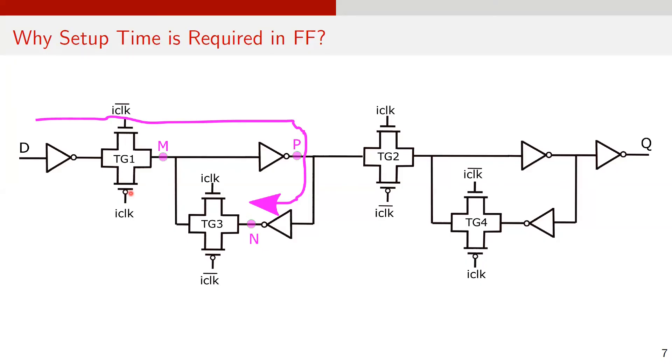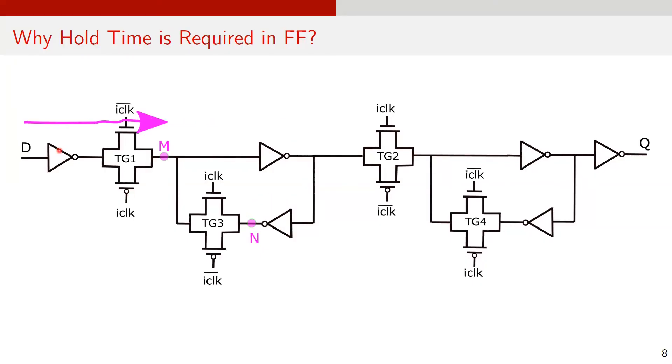Now for the hold time. The clock signal goes through inverters to generate I-clock and I-clock bar. So there is a time delay between clock, I-clock, and I-clock bar. Due to this time delay, the transmission gate TG1 is not turned off immediately after the rising edge of the clock and it takes some time to switch off.